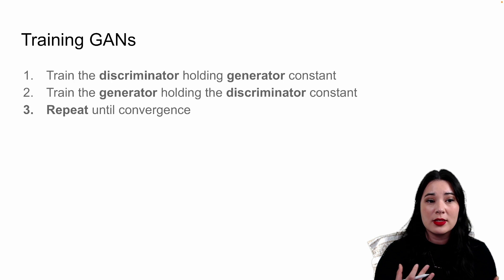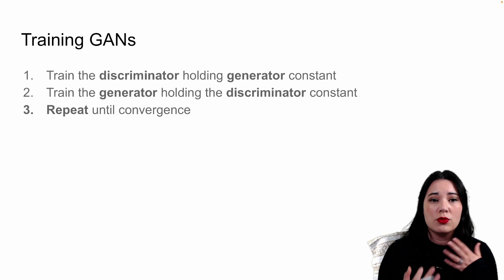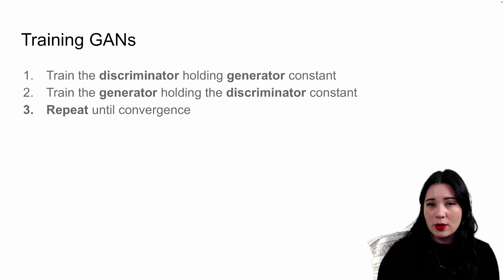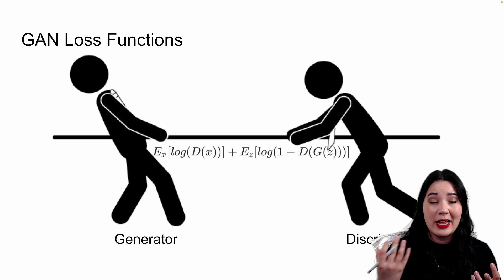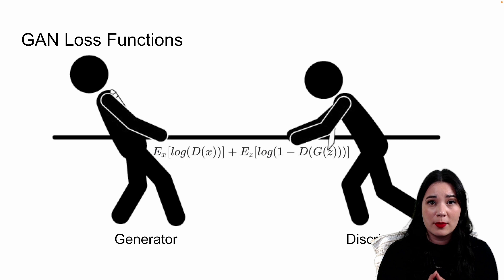Because our GAN is basically two neural networks in a trench coat, we're going to train each part separately. Typically we train the discriminator while holding the generator constant, using the fake inputs from the generator to update only the discriminator's weights. Then, once we've trained the discriminator, we train the generator while holding the discriminator constant. We repeat these steps — holding generator constant, updating discriminator, then holding discriminator constant, updating generator — over and over until, hopefully, our GAN converges and is generating pretty realistic images.